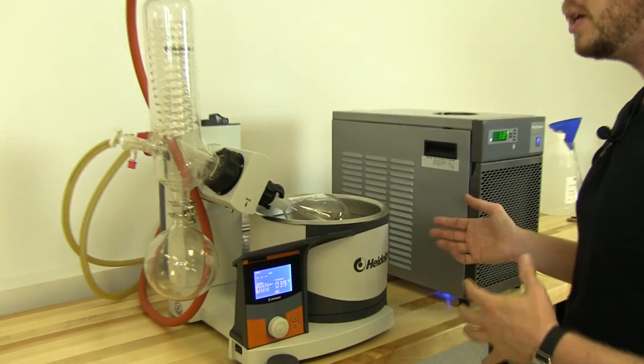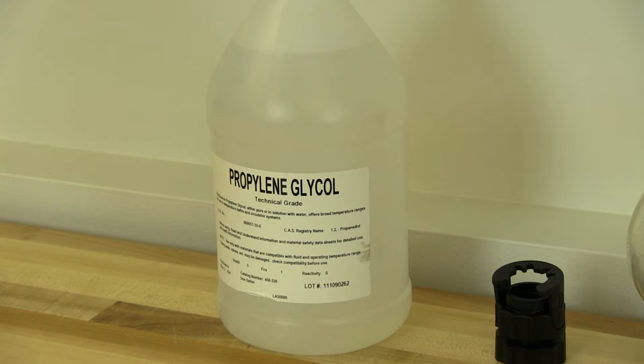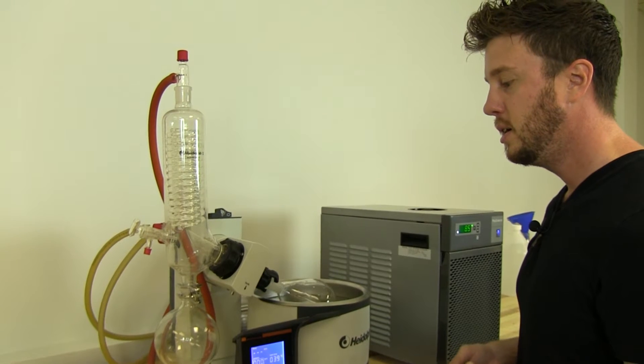Propylene glycol is a food safe antifreeze. It's found very commonly in cosmetics. It's also found in things like windshield washer fluid, plane de-icer. It's safe for the environment, non-toxic, food safe.